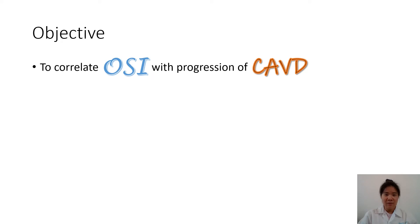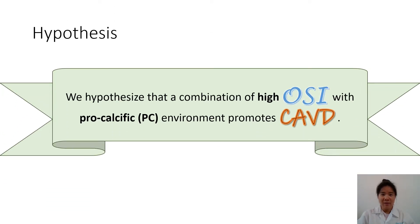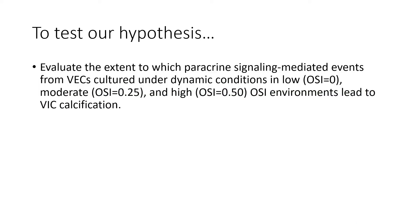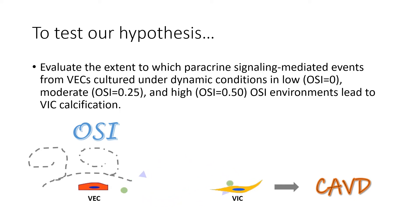The objective of this study is to correlate OSI with progression of CAVD. We hypothesize that a combination of high OSIs with a procalcific environment promotes aortic valve calcification. To test our hypothesis, we evaluated paracrine signaling events, or communication between cell types, specifically from VECs to VICs that lead to calcification. The VECs were subject to low, moderate, and high OSIs. We want to identify the impact of different OSIs on VECs and how they relay messages to VICs that may or may not lead to calcification.